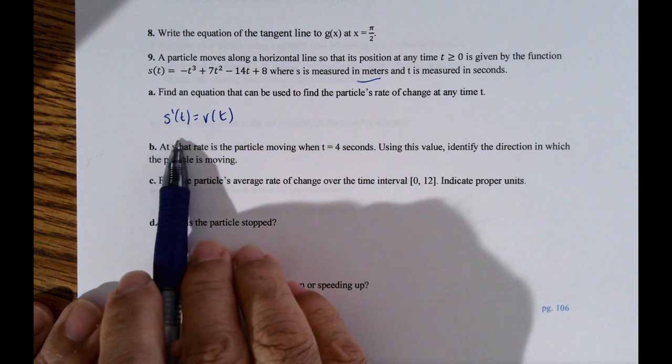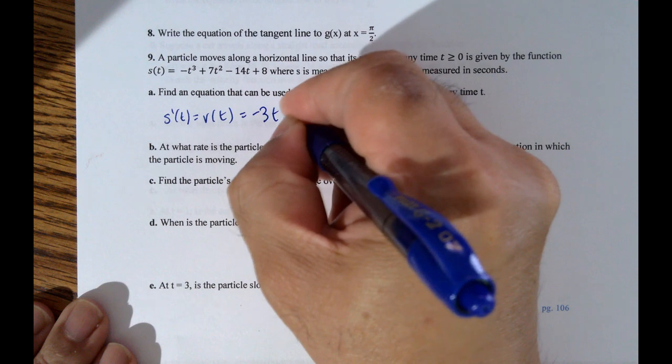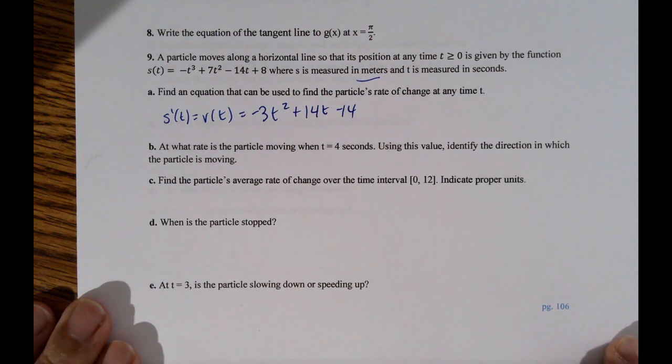So that's s prime of t equals v of t. And you just take the derivative, so it's negative 3t squared plus 14t minus 14. And that's it.